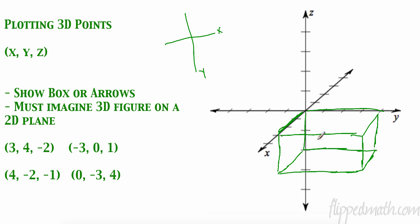Drawing these isn't easy, but which corner of the box is our point? We want three on the x, four over on the y, and then down two on z — right here. This box method makes it look three-dimensional. I'll always put an arrow pointing to the specific point. Let's do another one.